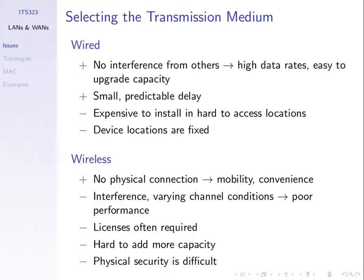So wireless can be better in those cases — it's very convenient without needing to add wires. Wireless also allows mobility, which is a key advantage. With wired, device locations are fixed. So depending on your requirements, you choose a network technology based on the transmission medium: if you want mobility, you need wireless; if you want high performance without mobility, wired may be better.